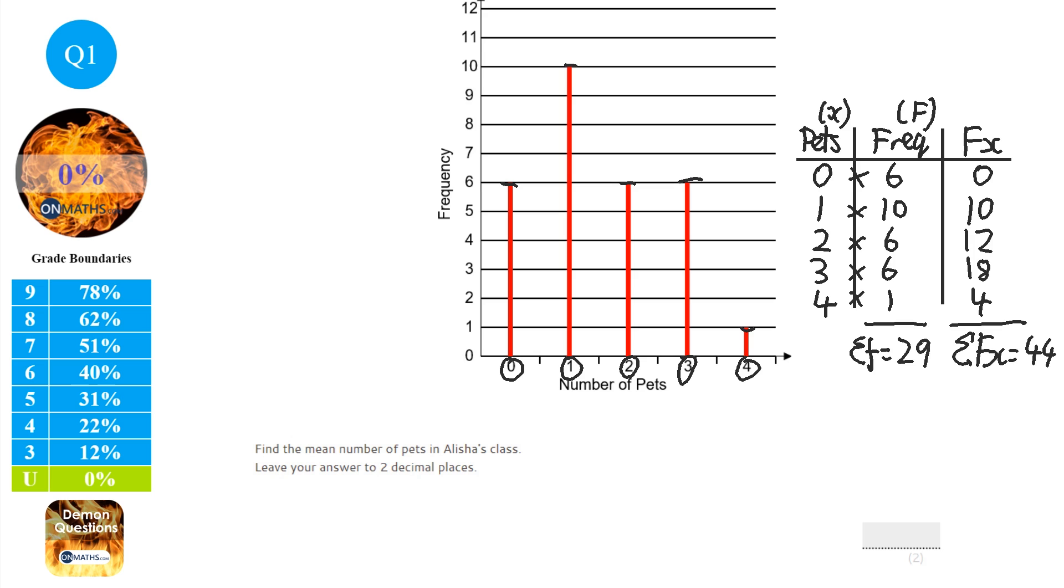Now, the mean is all of the stuff added together over how many there are. So you kind of want to swap these over. So it's 44 over, which means divide, 29. So 44 divided by 29. And it comes up with a fraction in the calculator, so just press S to D. And that equals 1.5172 blah blah blah. It asks for two decimal places, so to two decimal places that is 1.52, because that 7 moves that one up.